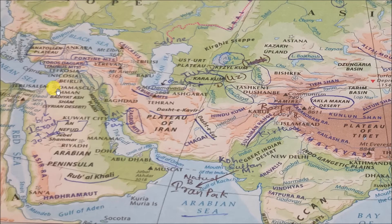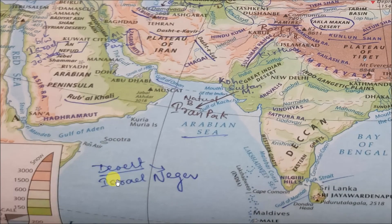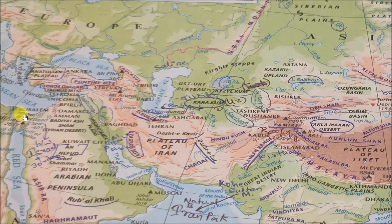Now we will go to deserts. We will start from the west. The first desert is in Israel — it is the Negev Desert. This is very important.